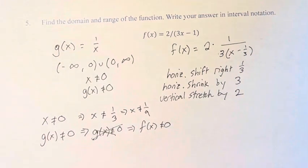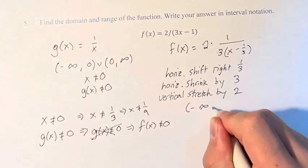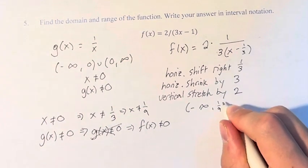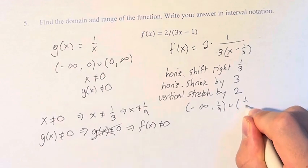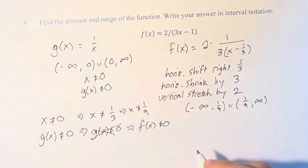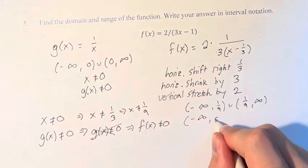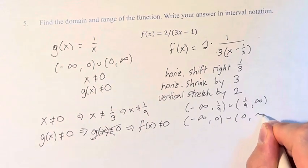And in interval notation, which is what they want, this means we go from negative infinity to 1 ninth, and 1 ninth to infinity, not inclusive, and from negative infinity to 0, then 0 to infinity.